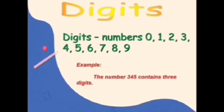For example, the number 345 contains 3 digits. They are 3, 4, and 5. Digits are used to make numbers. Digits are from 0 to 9.